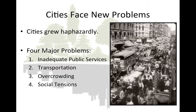Second, transportation: horse-drawn coaches and, later, electric trolleys were needed to transport workers to their jobs. To eliminate the pollution created by coaches and trolleys, New York City built a subway in 1900. By 1930, New York City had the world's largest subway system. Third, overcrowding: families were crowded into tenements — small apartment buildings — that often lacked daylight, heat, fresh air, and adequate plumbing.